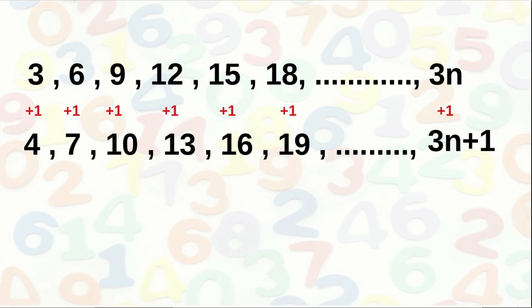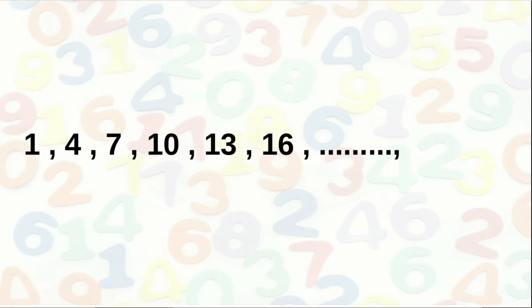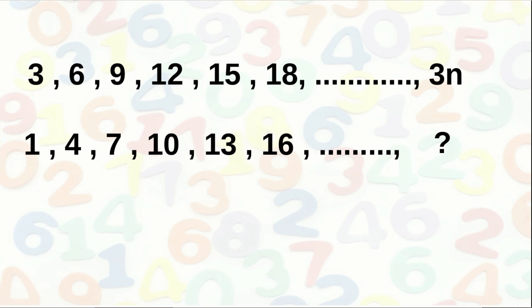Now consider the sequence 1, 4, 7, 10, 13, 16, etc. It starts with 1 and proceeds with the addition of 3 repeatedly. Comparing with the sequence of multiples of 3, the terms of 1, 4, 7, etc. are got by subtracting 2 from the terms of the multiples of 3. Therefore the nth term is 3n − 2.